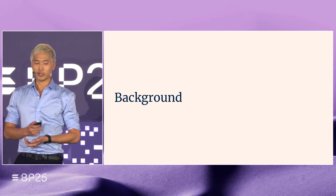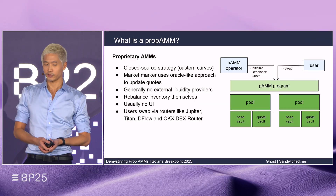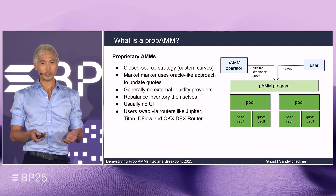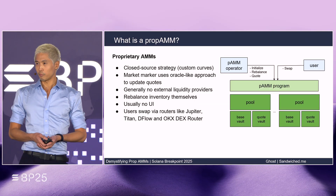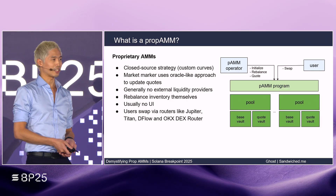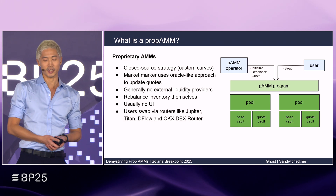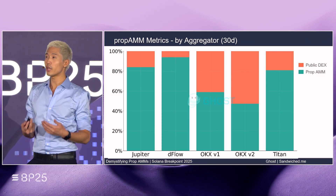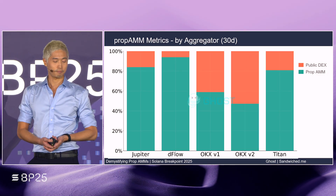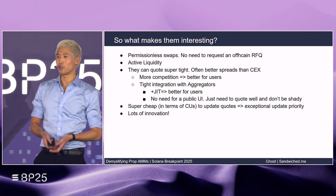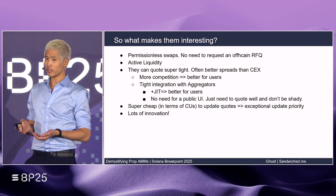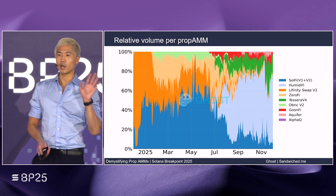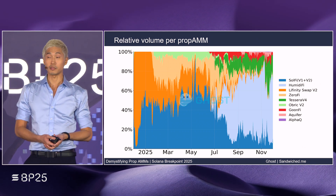So what is a Prop AM? Prop AM looks like just another AMM from a user's perspective, but they behave more like on-chain market makers with active coding logic. They're closed source with private strategies and curves, and operators actively manage inventory. They don't take deposits and oftentimes don't have a front-end, so you usually interact with them through aggregators. Some aggregators lean on Prop AMs more than others because their price is great. Prop AMs allow for permissionless swaps and are very competitive — they quote very tightly and cheaply, and can react very quickly. Generally we see about two to four Prop AMs that dominate the industry, but the landscape can shift very quickly.